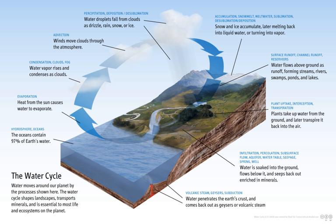These heat exchanges influence climate. The evaporative phase of the cycle purifies water which then replenishes the land with freshwater. The flow of liquid water and ice transports minerals across the globe. It is also involved in reshaping the geological features of the Earth, through processes including erosion and sedimentation. The water cycle is also essential for the maintenance of most life and ecosystems on the planet.